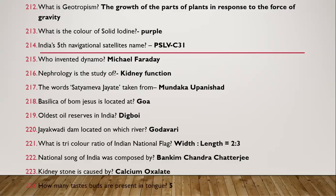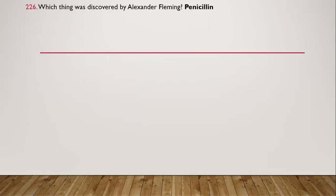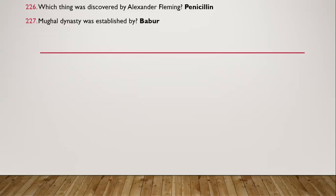Question 215: How many taste buds are present in the tongue? Five. Question 216: Penicillin was discovered by Alexander Fleming. Question 217: Mughal dynasty was established by Babur.